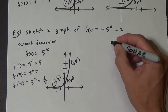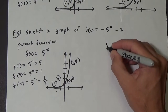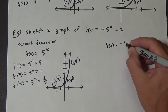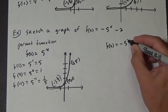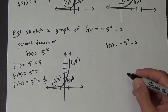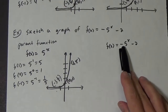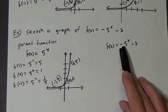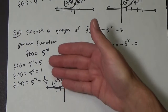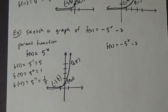Okay, so now let's sketch f of x equals negative 5 to the x power minus 2. We have to think about what transformations are being performed on our parent function. Well, we have a negative, and this negative is outside the function. So because it's outside the function, that means we're taking this graph and reflecting it over the x-axis. And then the minus 2 is shifting this down 2 units.